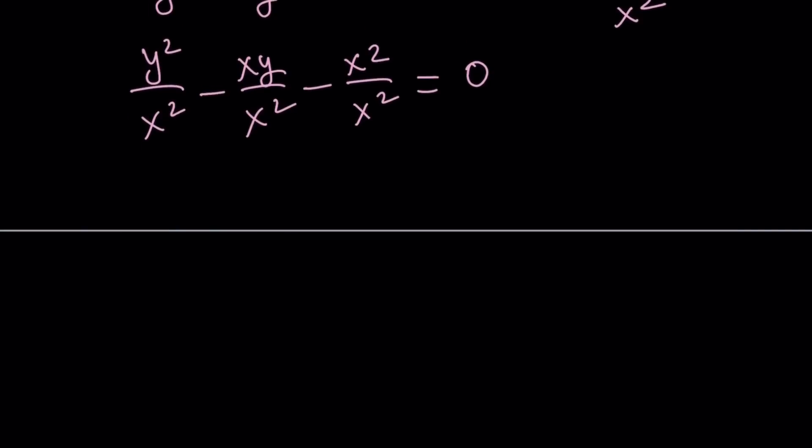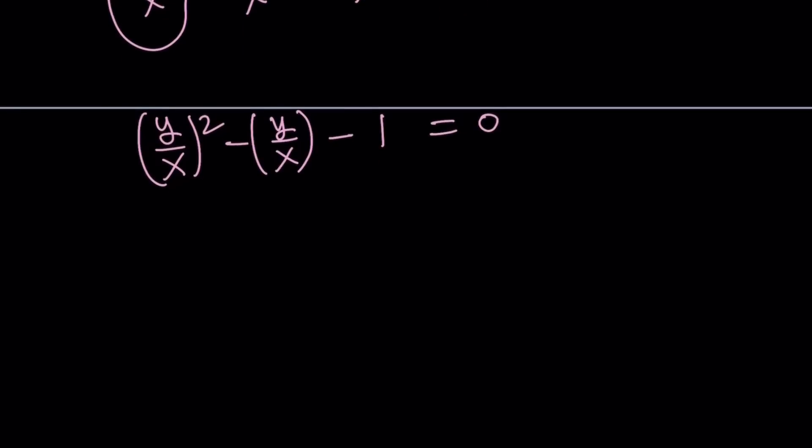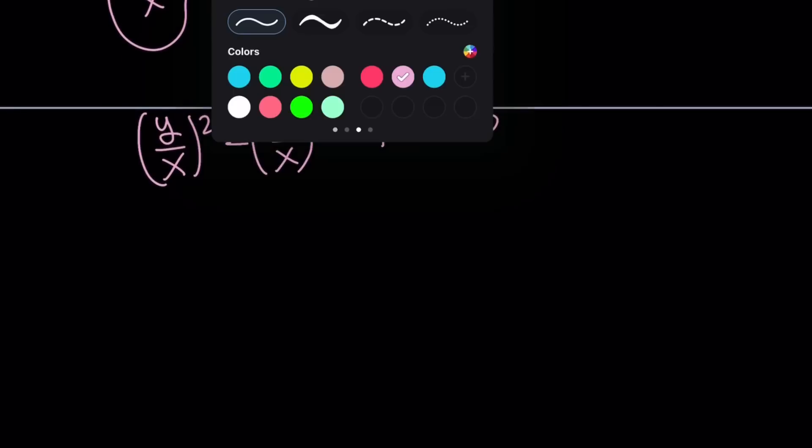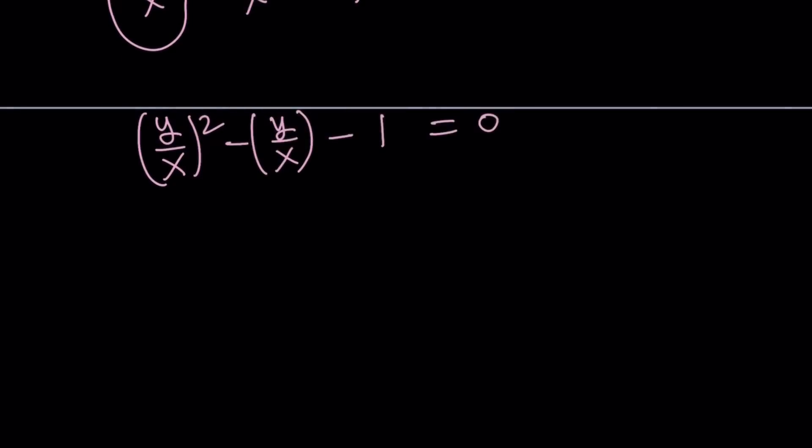Now this is y squared over x squared, which is y over x squared. One of the x's cancel out leaving us with y over x. I don't need parentheses but I'm just going to express it that way: minus 1 equals 0. So now I think this calls for substitution doesn't it? We can go ahead and say let y over x be t. It can be any variable by the way.